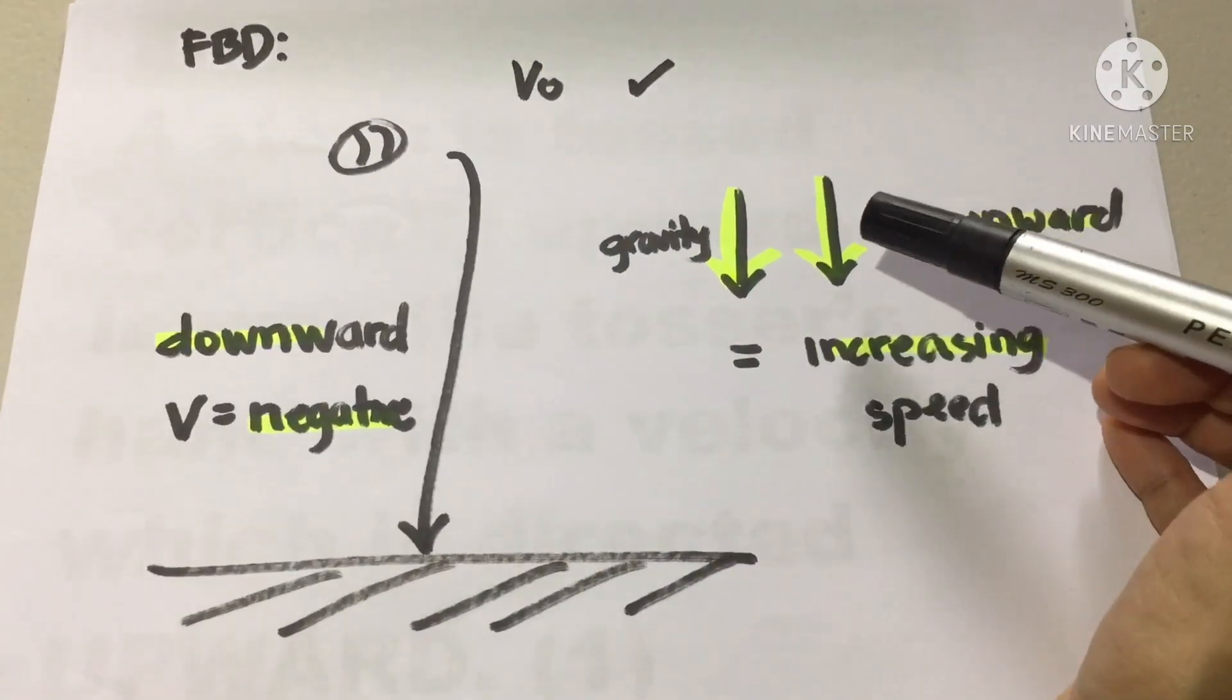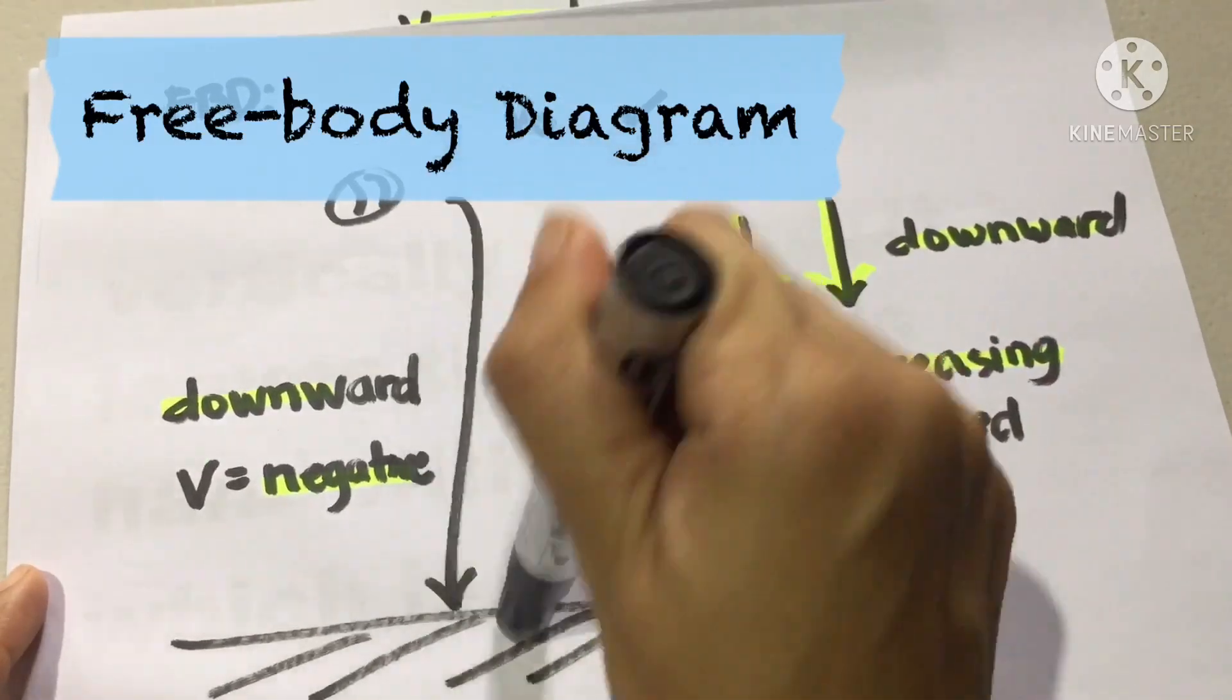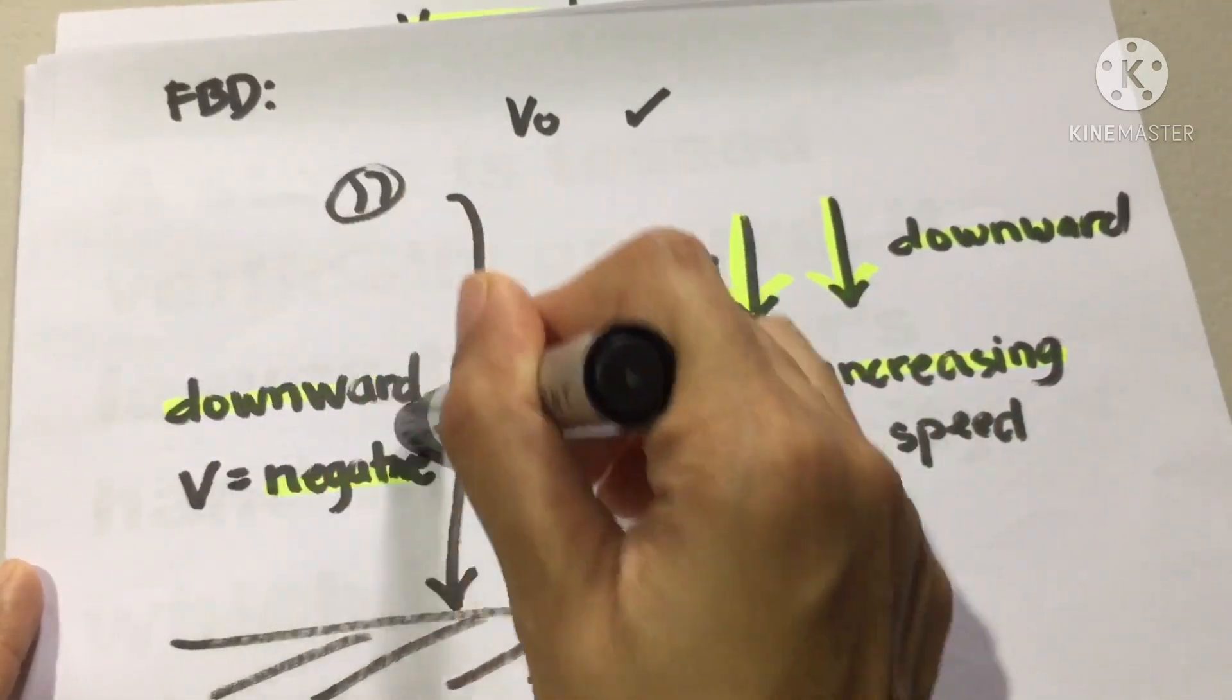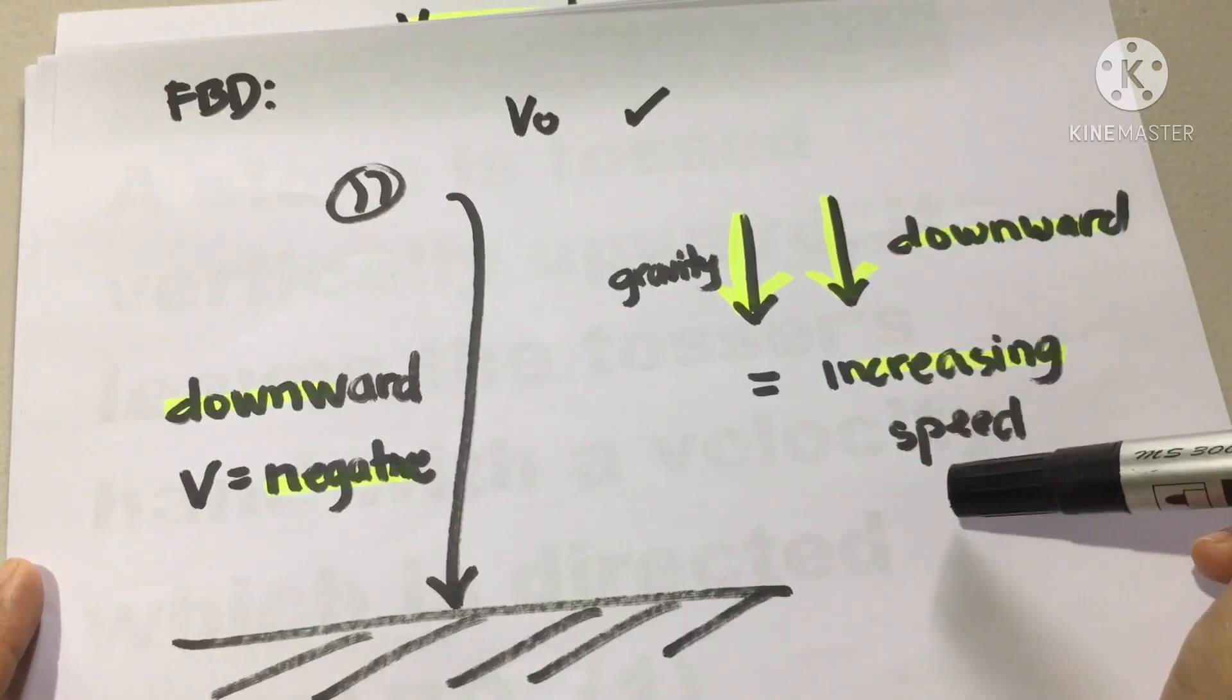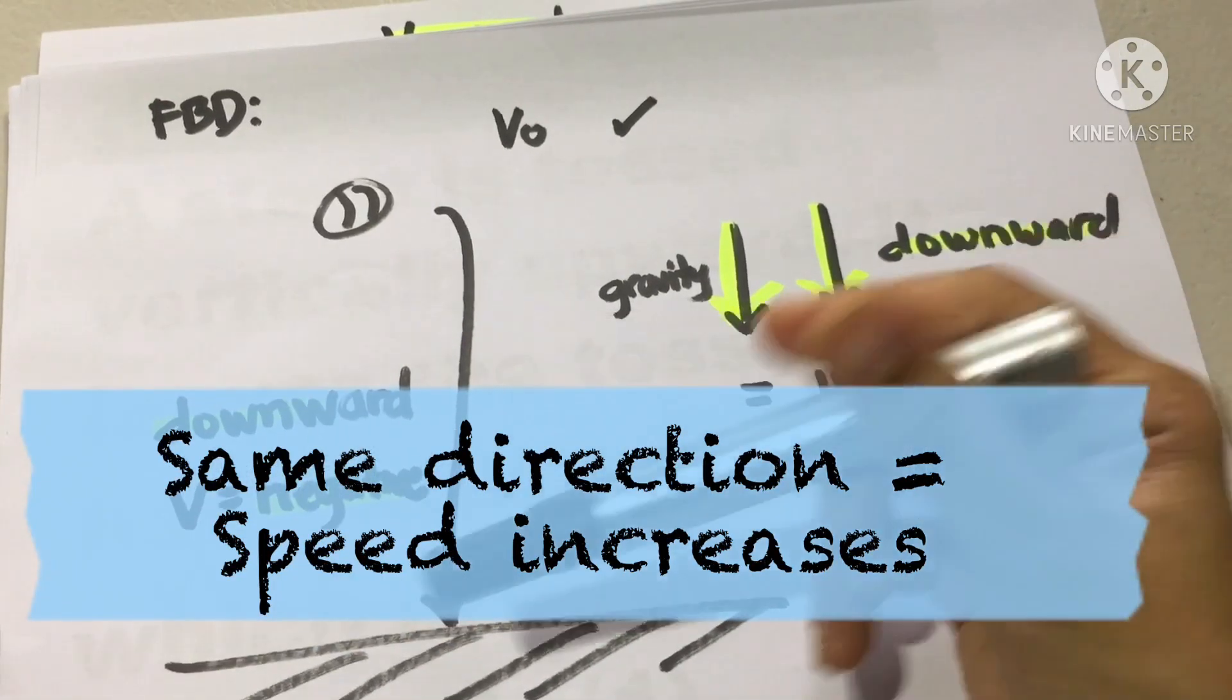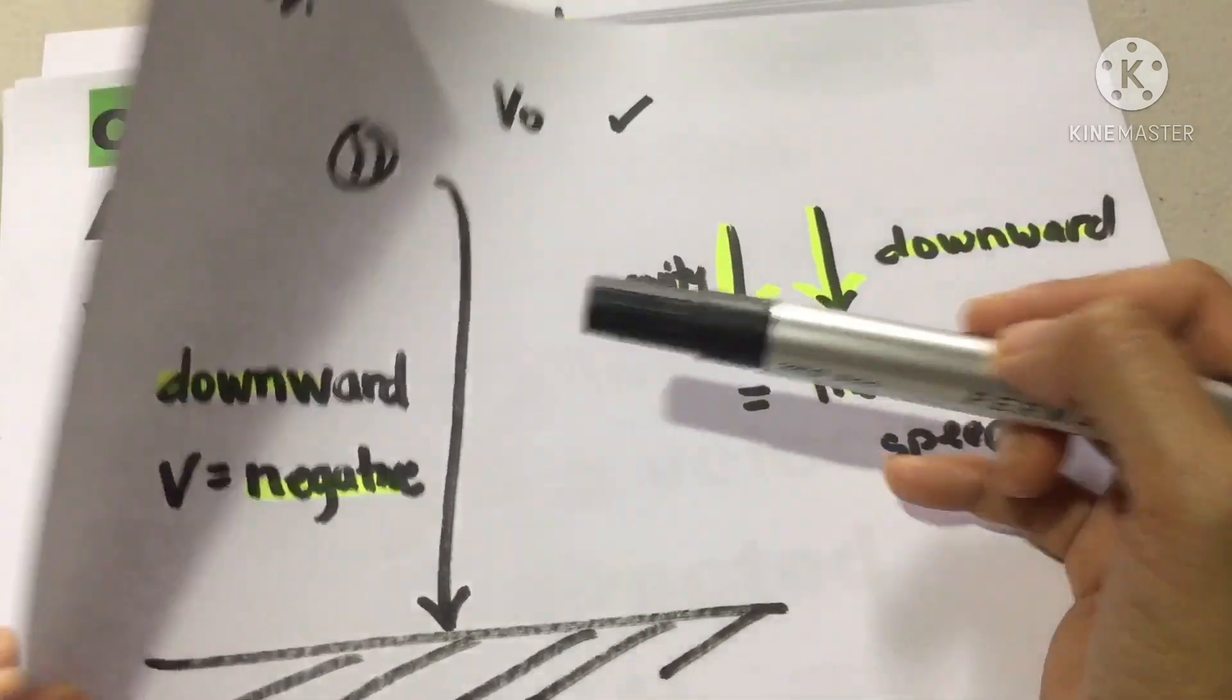We're going to observe in our free body diagram. A body thrown down. So we will expect that its direction is downward and then the acceleration is due to gravity. Therefore, they are in the same direction. So we will expect that the velocity or the speed increases and the value or the sign of our velocity is negative.